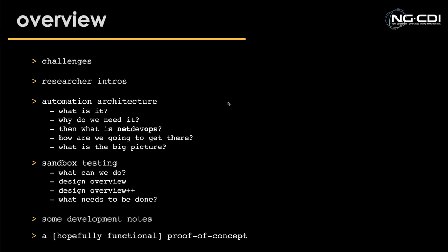First off, I'll go over some of the challenges that network automation is up against, then why this is something Paul and I are looking into. The core of this presentation is split into two parts: a general concept of the automation architecture, and the second being specific to network testing. These may weave nicely into other parts of the NGCDI project too.